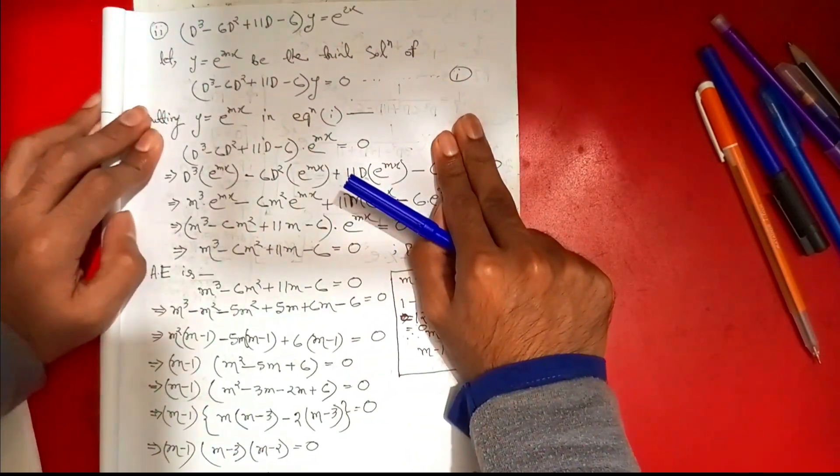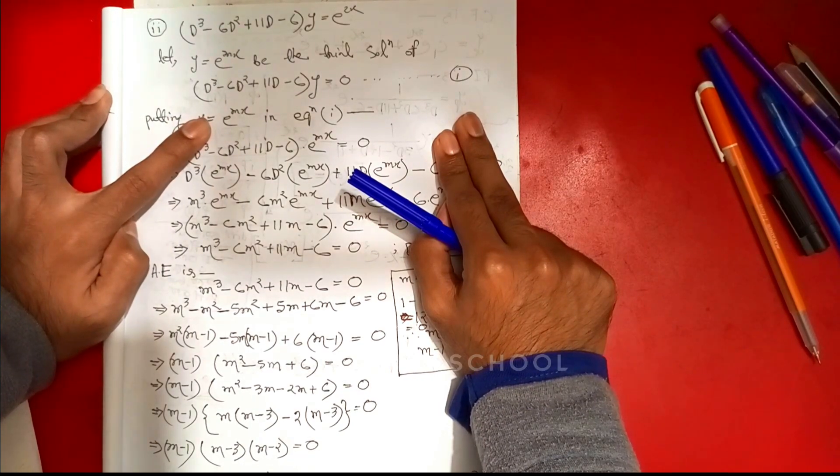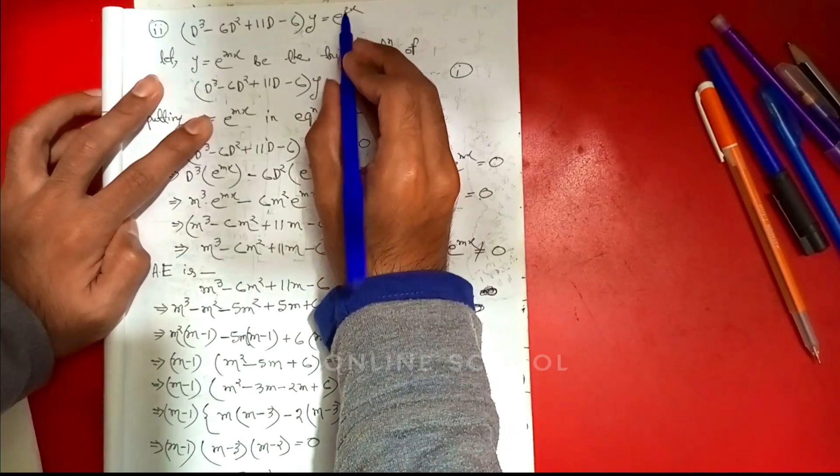The given equation is d³ - 6d² + 11d - 6 into y is equal to 2x.